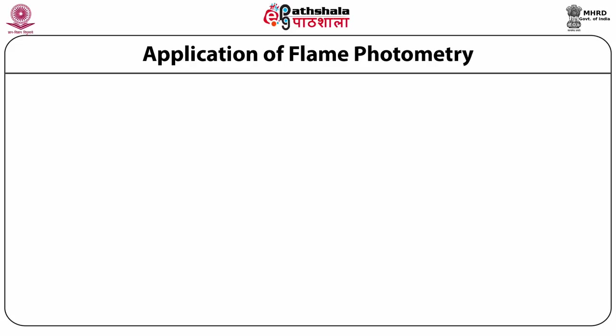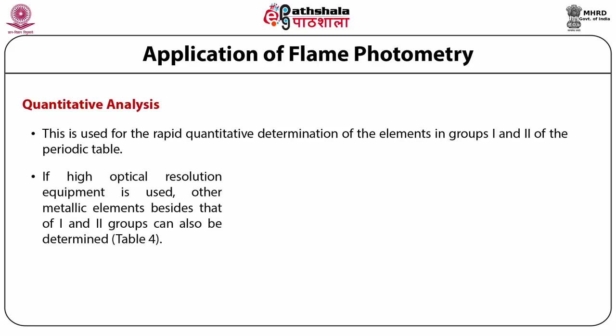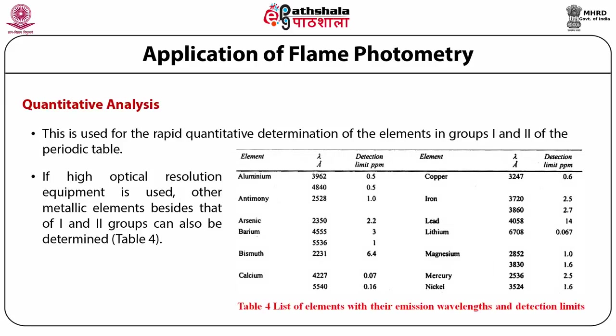Quantitative analysis is one of the most useful applications of flame photometry, used for rapid quantitative determination of elements in groups 1 and 2 of the periodic table. With high optical resolution equipment, other metallic elements beyond groups 1 and 2 can also be determined. A table listing elements with their emission wavelengths and detection limits includes elements such as aluminum, antimony, arsenic, bismuth, barium, and calcium, all of which have been successfully determined by flame photometer.